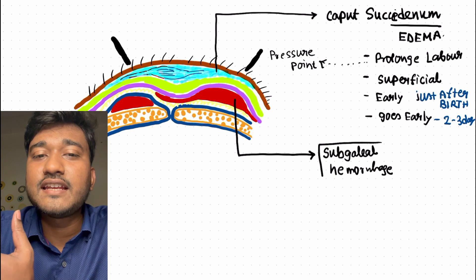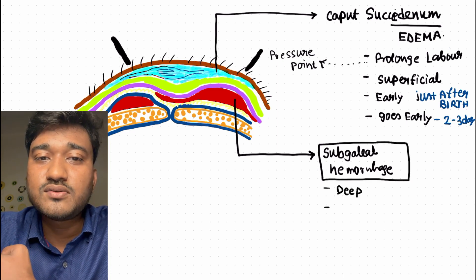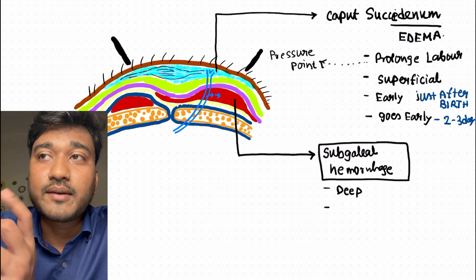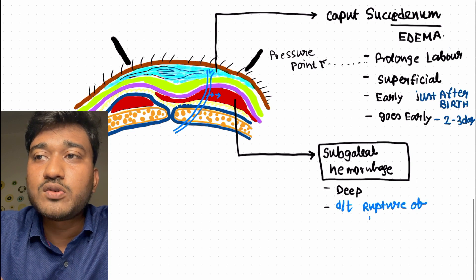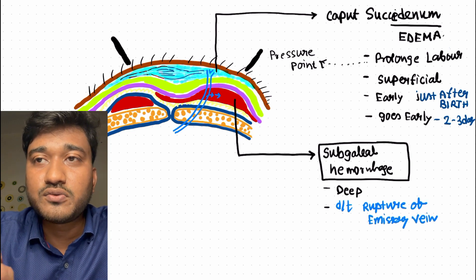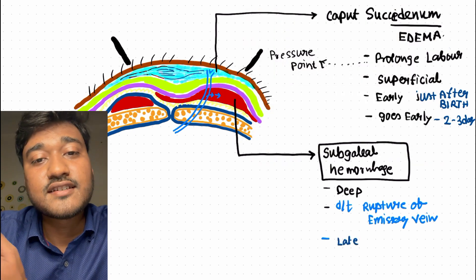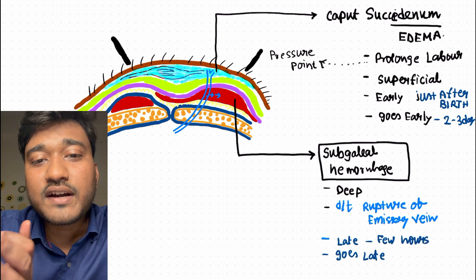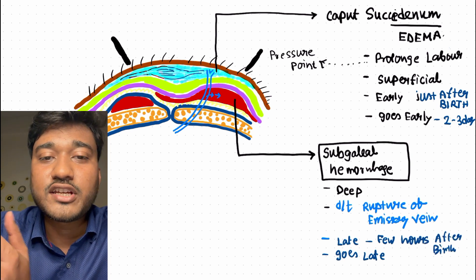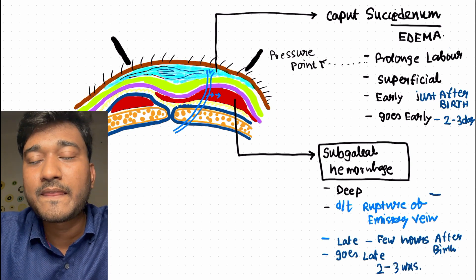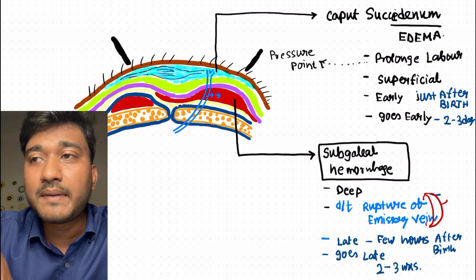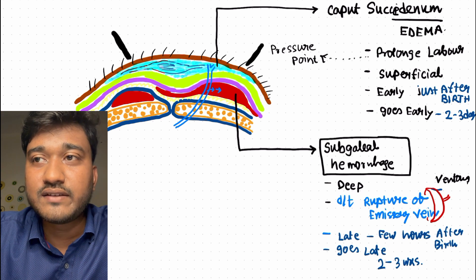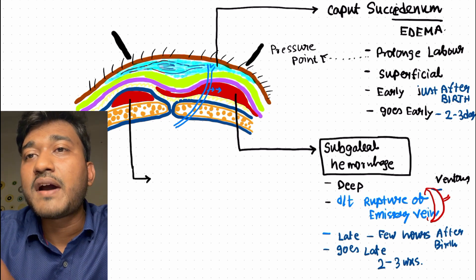Subgaleal hemorrhage occurs within the subgaleal space, between the loose areolar tissue and the epicranial aponeurosis — this is deeper in location, so the pressure is much more than in caput succidaneum. It occurs due to rupture of the emissary vein. Being deeper, it appears late — after a few hours of birth — and it also resolves late, around two to three weeks after birth. It occurs mainly due to ventouse-assisted delivery.